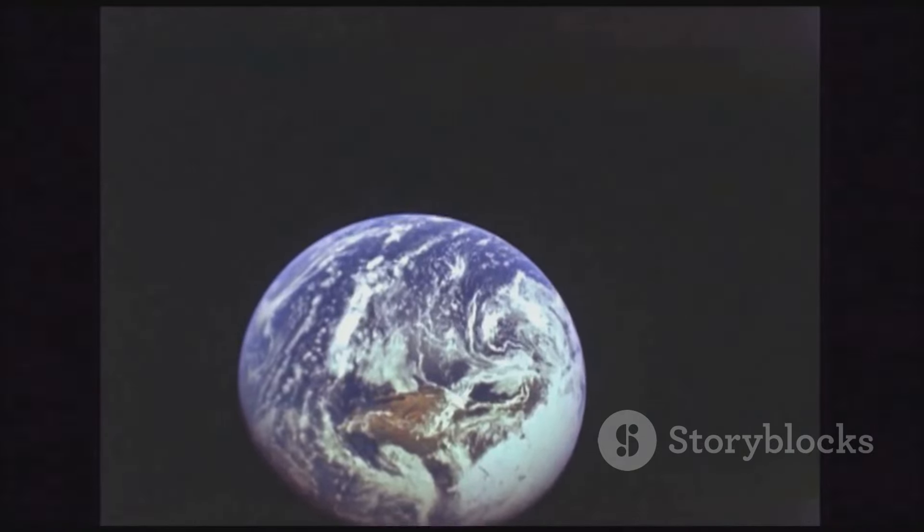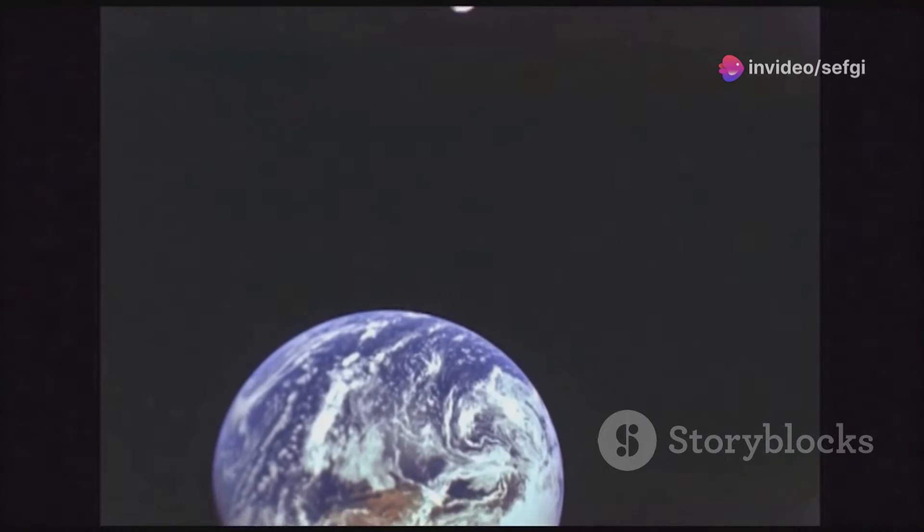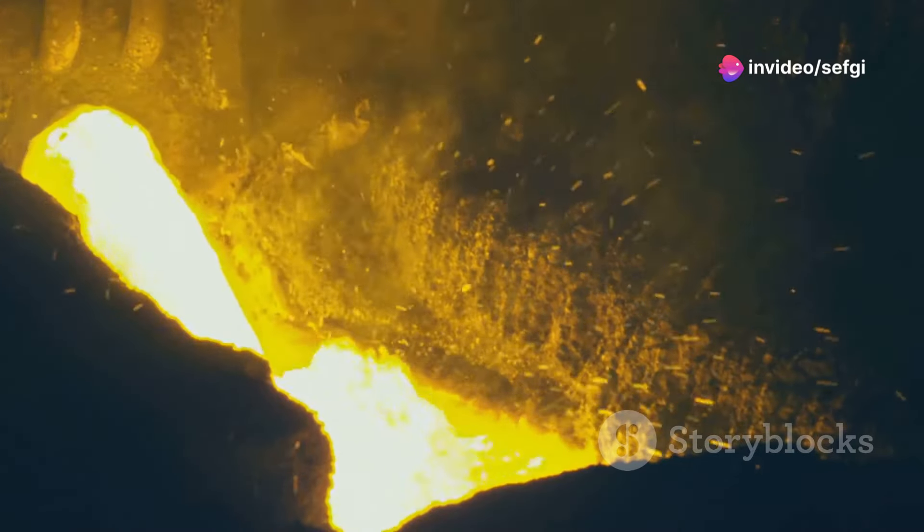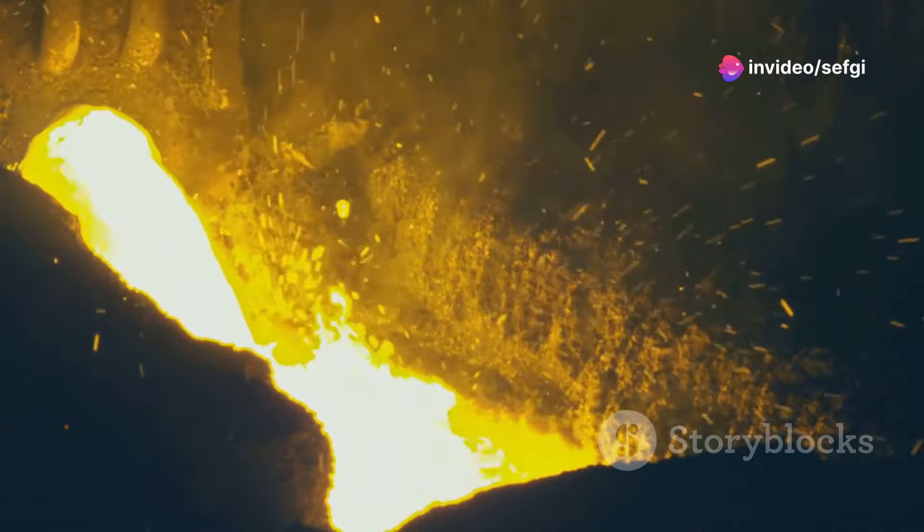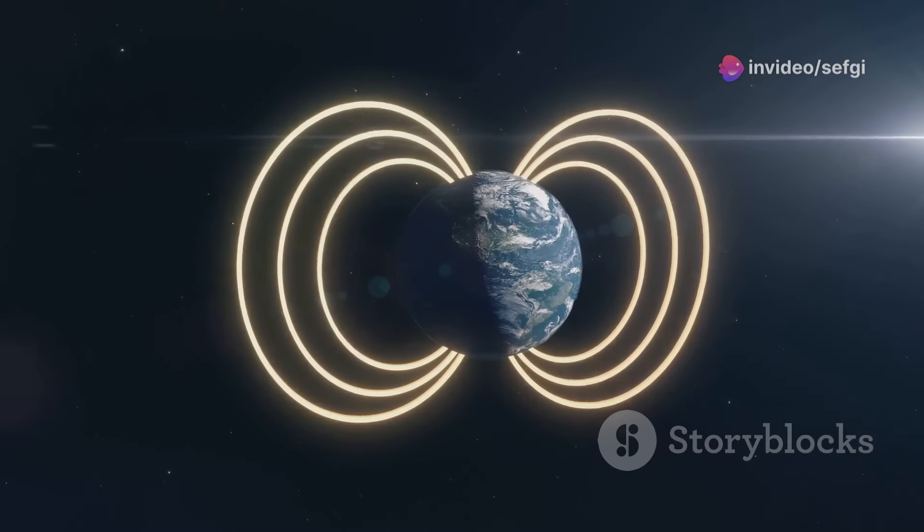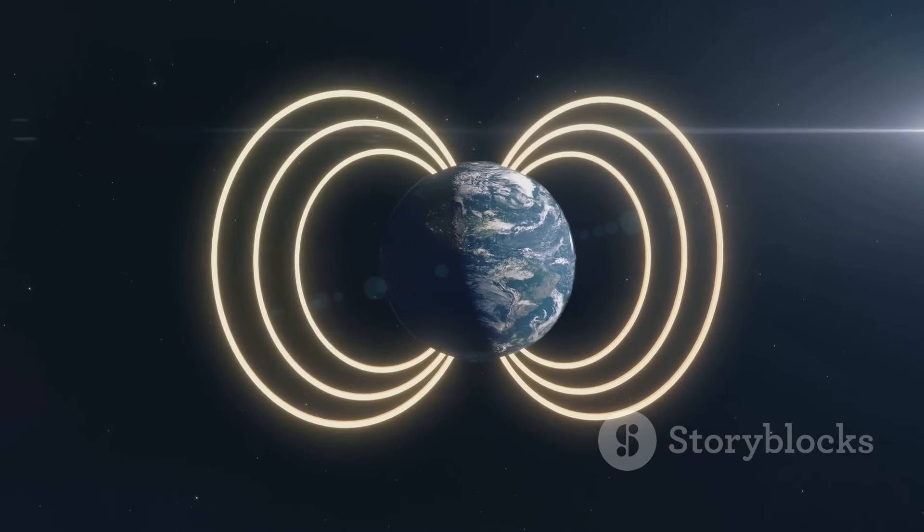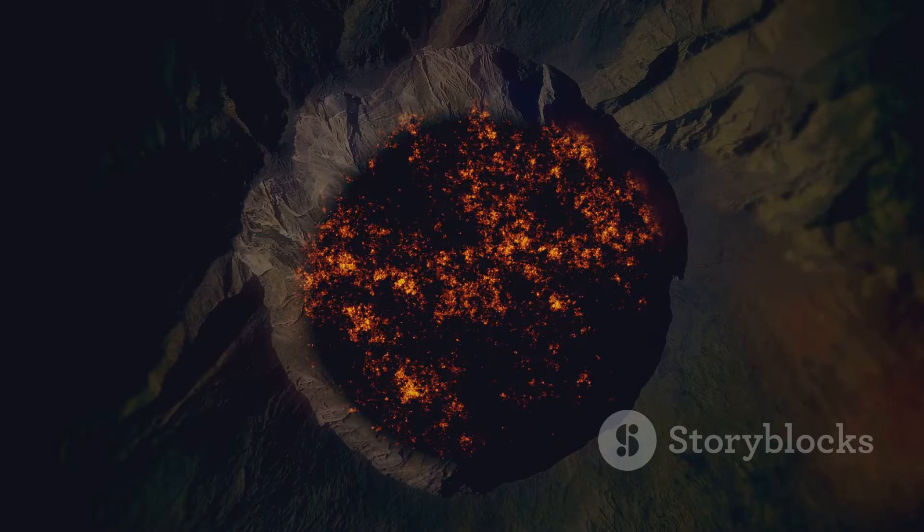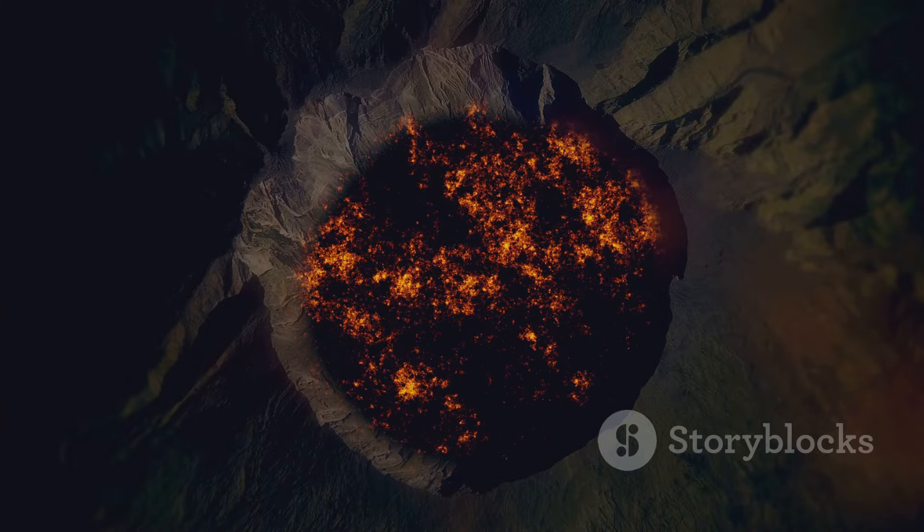The immense pressure, however, keeps it from behaving like the liquids we're familiar with. It's more like a molten metal, swirling and churning deep beneath our feet. This flowing ocean of metal is what generates Earth's magnetic field. So, the center of our planet isn't just hot, it's molten hot.